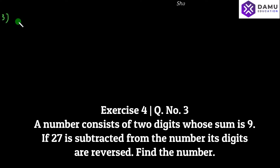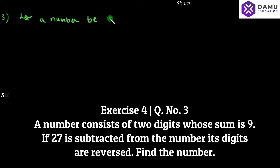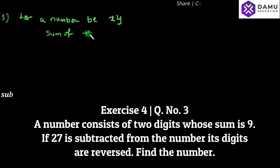A number consists of 2 digits whose sum is 9. Let the number be xy, where y is one digit and x is another digit. The sum of the digits: x plus y will be equal to 9.